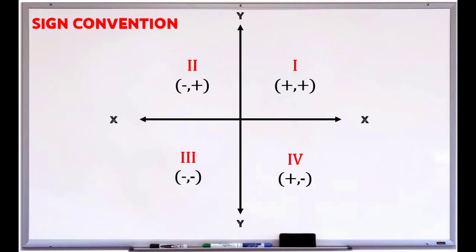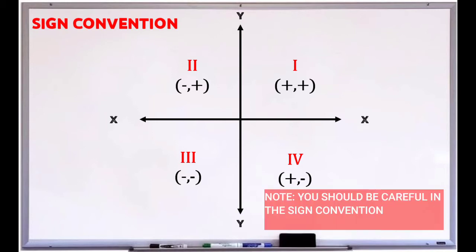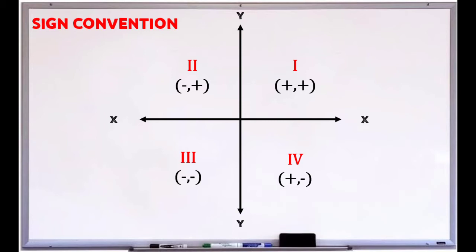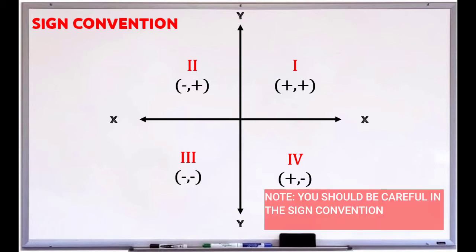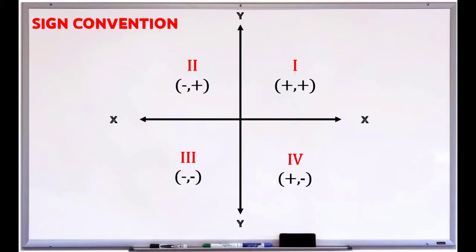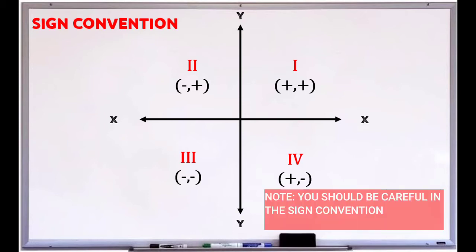The shown figure illustrates the correct sign convention for latitude and departure. In the first quadrant, the latitude and departure are both positive. In the second quadrant, the latitude is positive and the departure is negative. In the third quadrant, the latitude and departure are both negative. In the fourth quadrant, the latitude is negative and the departure is positive.